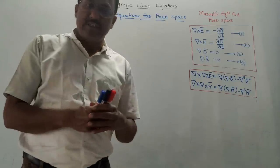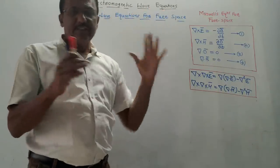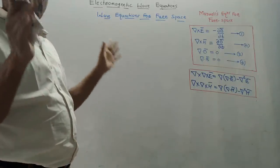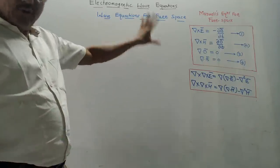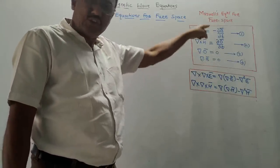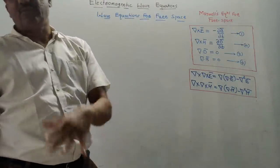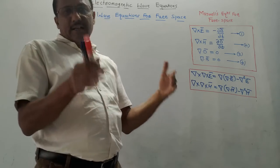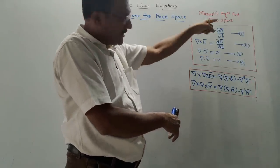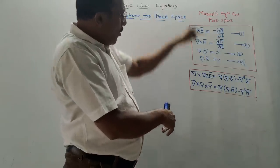Hello and welcome back to this channel. Today's topic is the electromagnetic wave equation, related to electromagnetic wave theory as well as uniform plane waves. For this derivation, we need Maxwell's equations for free space. This is the set of Maxwell's equations for free space — equations 1, 2, 3, and 4. You need to memorize this set.